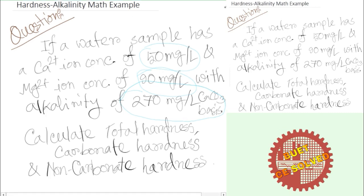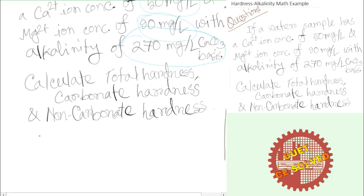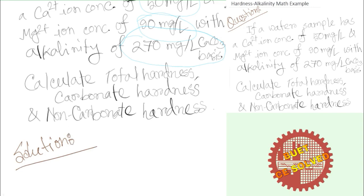So the alkalinity is given in calcium carbonate bases, and we have calcium ion and magnesium ion concentrations. So it will be 100% ion concentration.